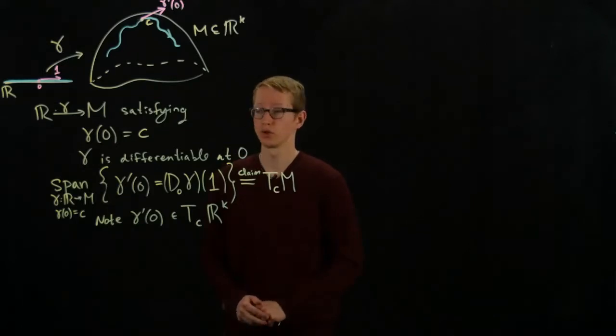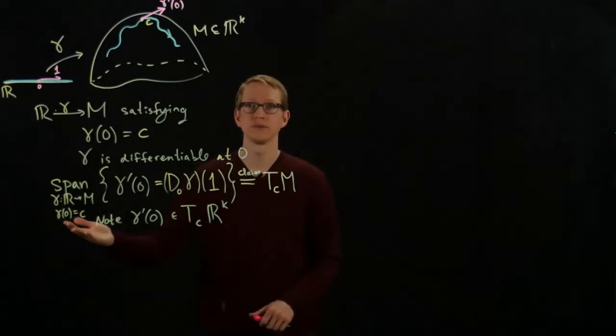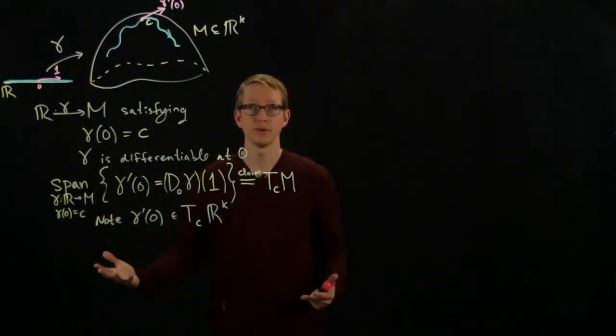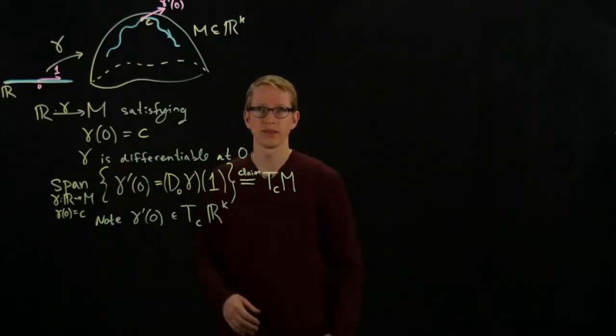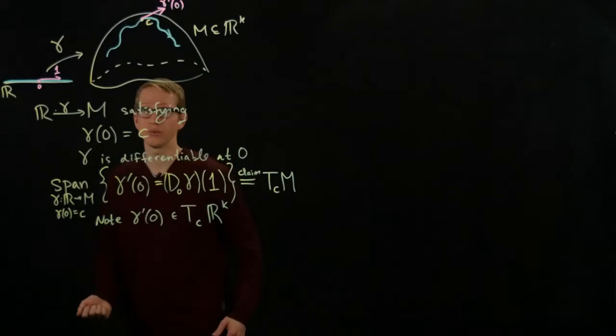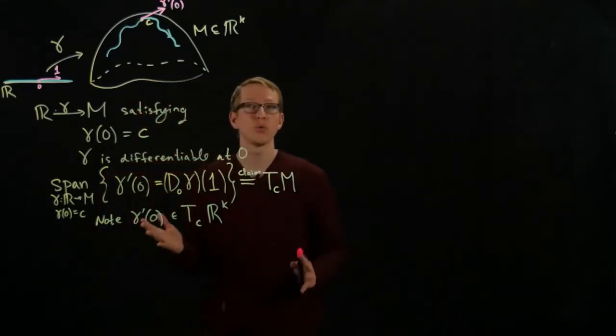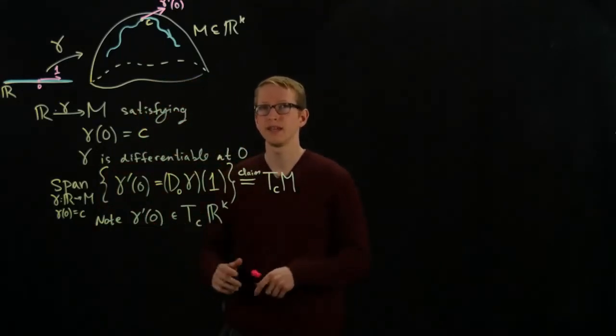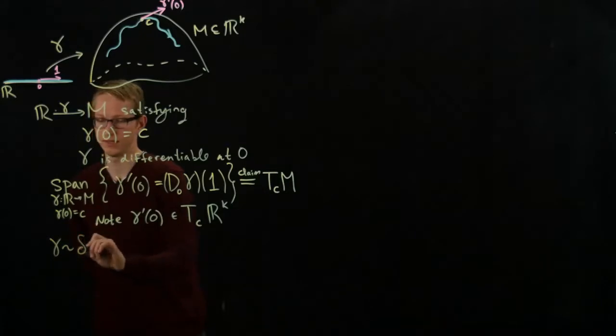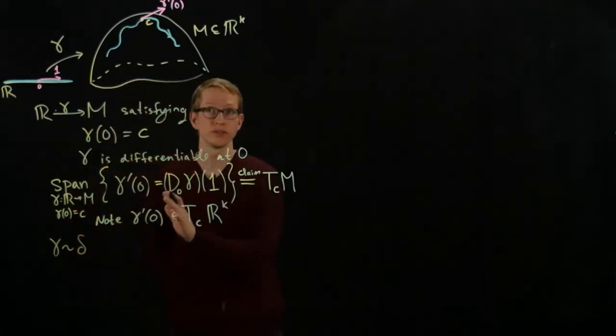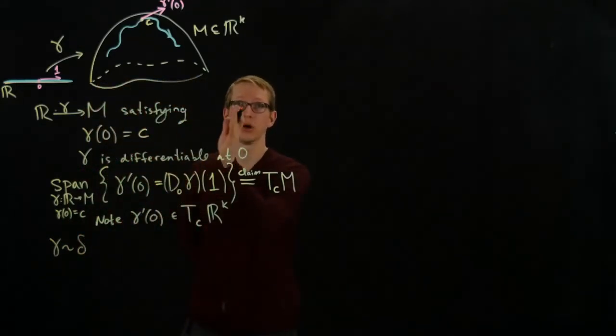But this is kind of difficult to work with. The set of all curves is highly infinite dimensional. So we need something more manageable to work with. And one thing that we can do is we can put an equivalence relation on the set of such curves. And the equivalence relation will say that gamma is equivalent to delta, and these are both differentiable curves from R to M.